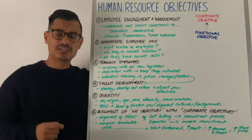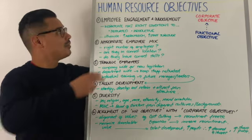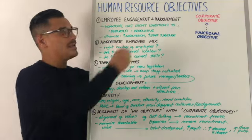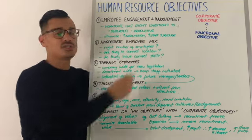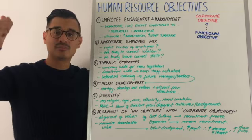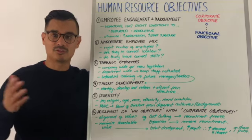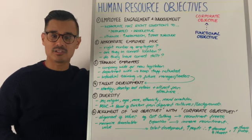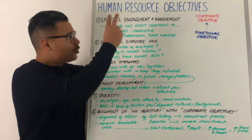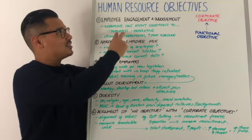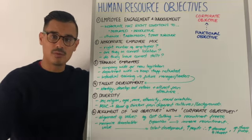The first and perhaps most obvious objective of the HR department is to ensure that employee engagement and involvement exists. You want to ensure the workplace has the right conditions — in terms of financial methods such as wages or salaries being appropriate, or non-financial methods such as health and safety or fringe benefits. You want these right conditions so that employees are motivated, which will lead to higher labour productivity.